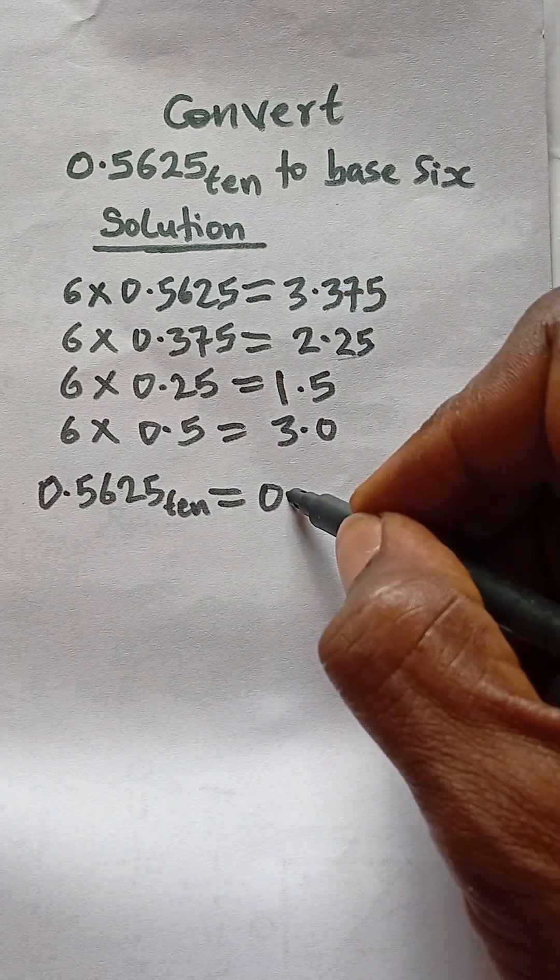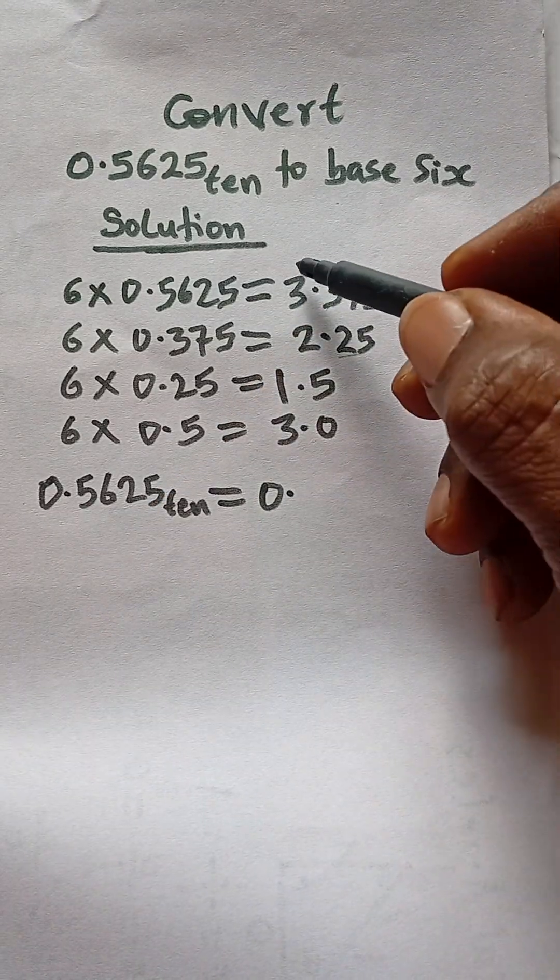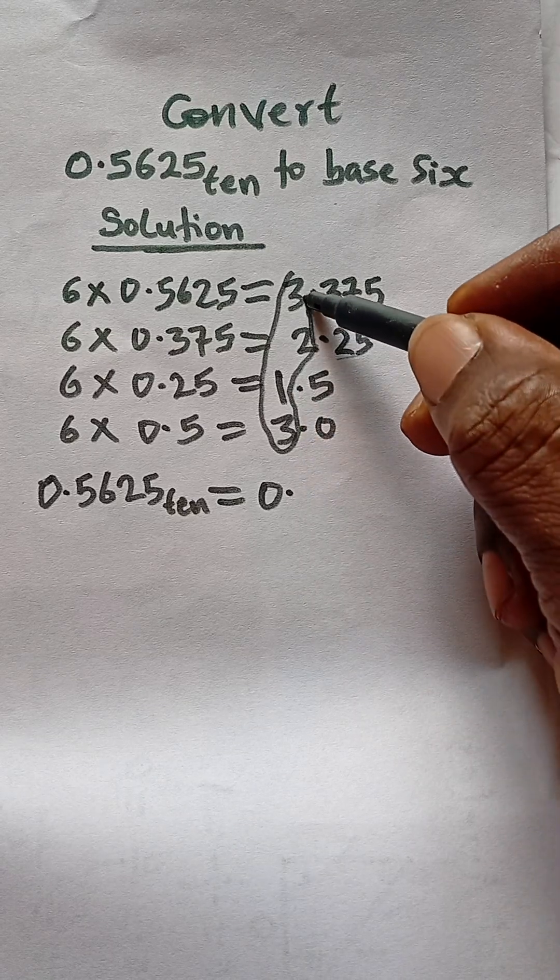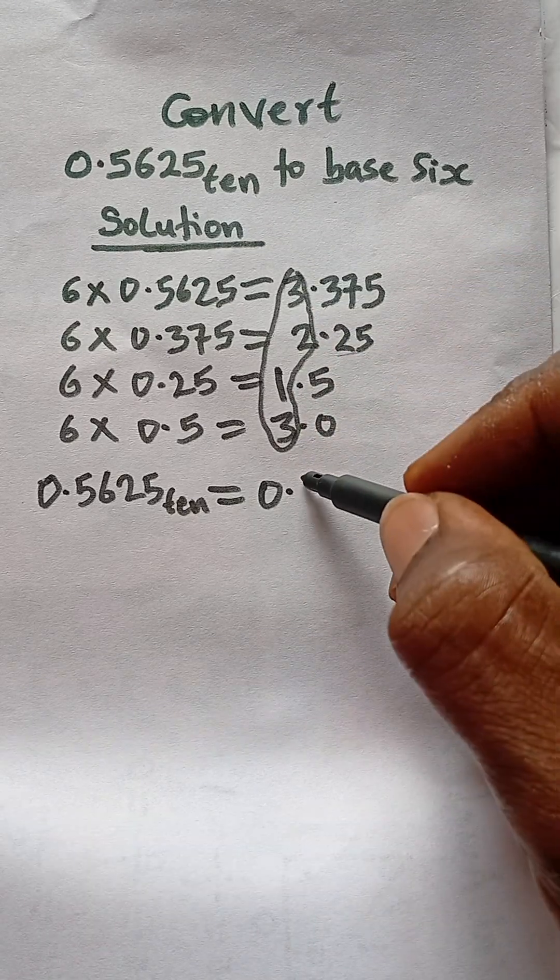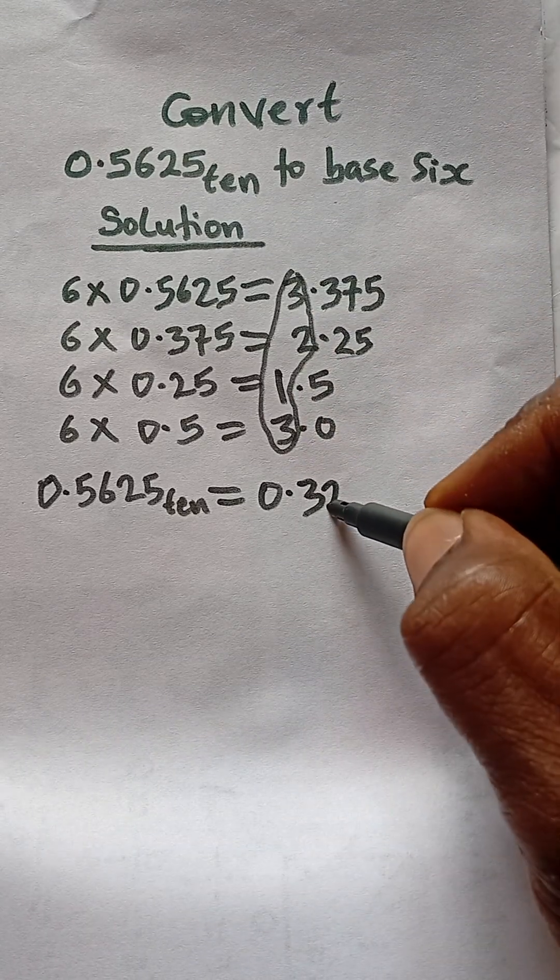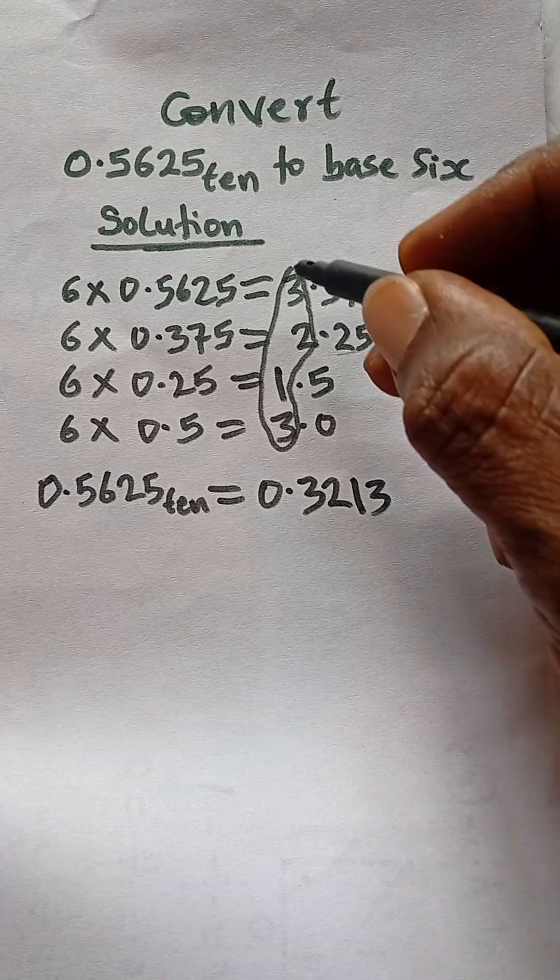and then you take these values here, so starting with 3, 2, 1, 3, that is these values here in base 6.